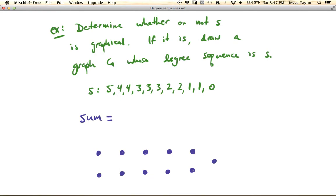Five and four would be nine, nine and four is 13, 16, 19, 22, 24, 26, 27, 28. So the sum of all these is going to be 28, which is even, which means that it should be graphical.